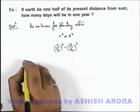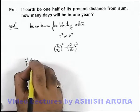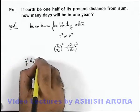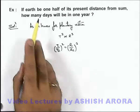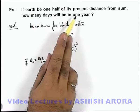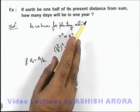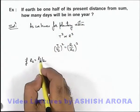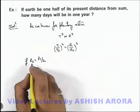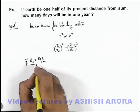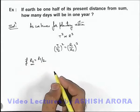Now we are given that R2 is equal to R1/2, as it is saying at half of its present distance from the Sun. So if its present distance is R1, it is changed from R1 to R1/2.